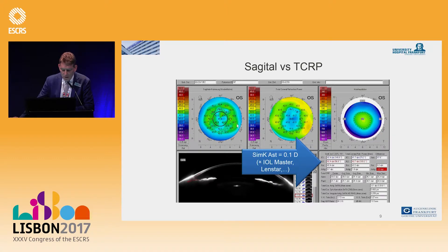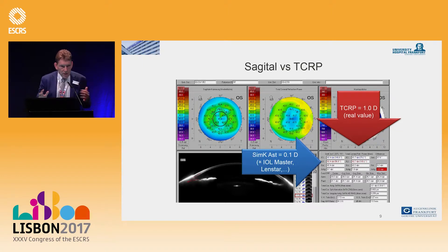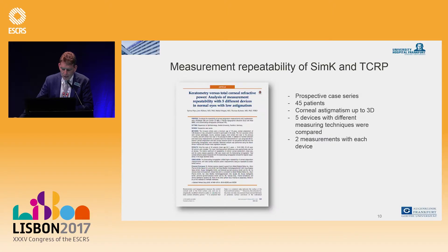In another case, SIMK shows 0.1 diopters, but looking at the total corneal refractive power map, the value is 1 diopter — a difference of 0.9 diopters. This differentiation arises because the posterior cornea is incorporated, and we know from many studies that the posterior cornea can add significantly to the corneal astigmatism component.